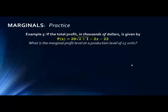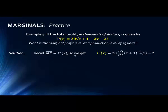Let's look at a practice problem. If the total profit in thousands of dollars is P(X) = 20√(X+1) − 2X − 22, what is the marginal profit at a production level of 15 units? We need to find P′(15). Using the chain rule — outer function is square root (power of 1/2), inner function is X+1 — we get P′(X) = 20·(1/2)·(X+1)^(−1/2)·1 − 2. The constant term's derivative is zero.